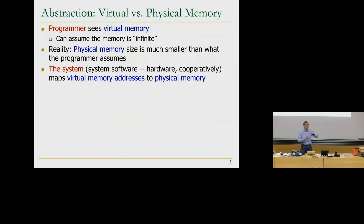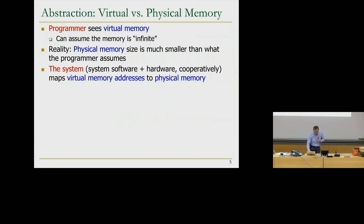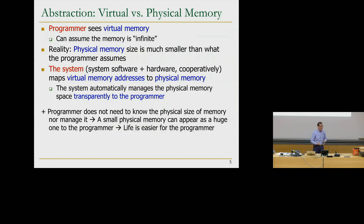They have a mapping internally that maps the programmer-specified addresses — virtual memory addresses — to physical memory addresses. Physical memory is where the data really is. Virtual memory is the address the programmer uses to refer to that data; it's essentially a name for the data the programmer is trying to access. Internally, that name gets mapped to a particular location, which could be in main memory or on disk. The system automatically manages the physical memory space transparently to the programmer.